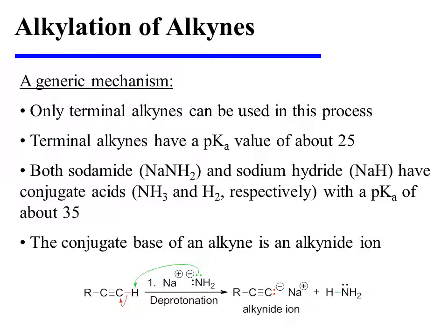Terminal alkynes have pKa values of approximately 25. Both sodium amide and sodium hydride have conjugate acids with pKa values of approximately 35, making them suitably strong bases to deprotonate a terminal alkyne completely. The conjugate base that is formed during this process is known as an alkynide ion.